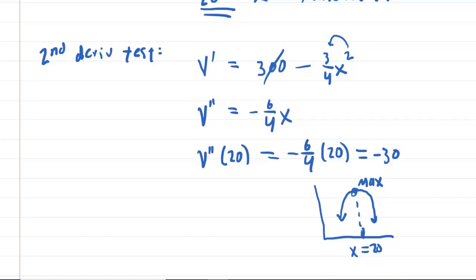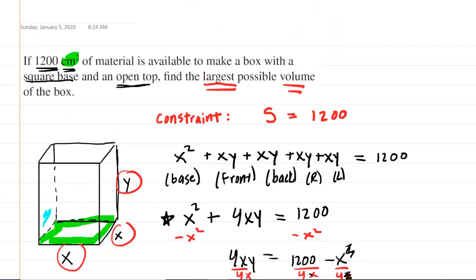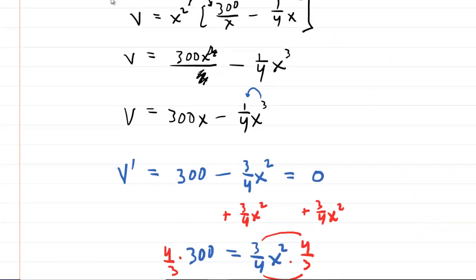So now that we've shown that X equals 20 maximizes the volume, we just have to go back up and make sure we answer the question. It wants us to find the largest possible volume. So we actually have to figure out the volume. But that's relatively easy because the volume equation, which is in its most simplified form right here, can be used to compute the volume by plugging in our X value.